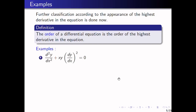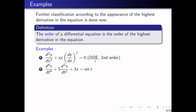The order of a differential equation is the order of the highest derivative in the equation. For example, in example one, the highest derivative is 2 — the second derivative of y with respect to x — so this is a second order differential equation. In example two, the fourth derivative of x with respect to t is taken, where x is the dependent variable and t is the independent variable, so this is a fourth order ordinary differential equation.